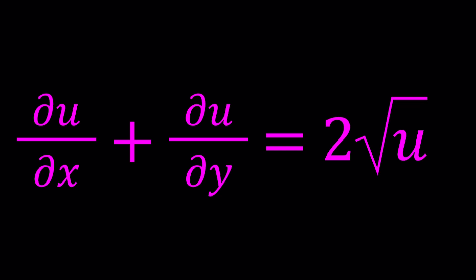So we have partial u with respect to x and partial u with respect to y, their sum is 2 times the square root of u. So we're going to try to find a function such that it gives us 2 times the square root of that function when we add the partial derivatives, which is something interesting, right? So we're going to go ahead and solve for it.